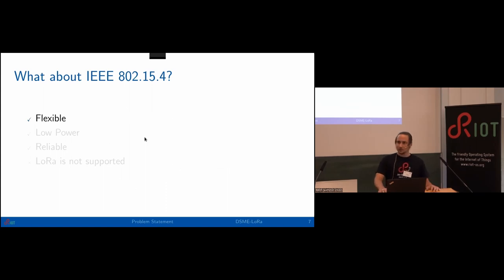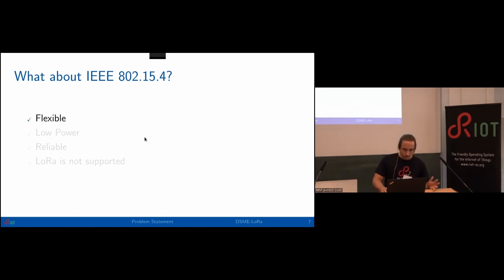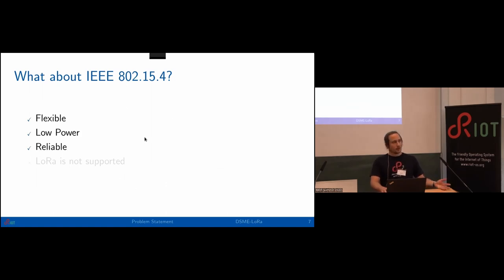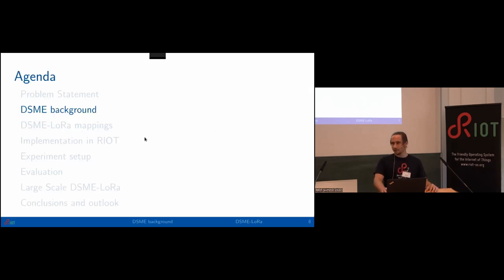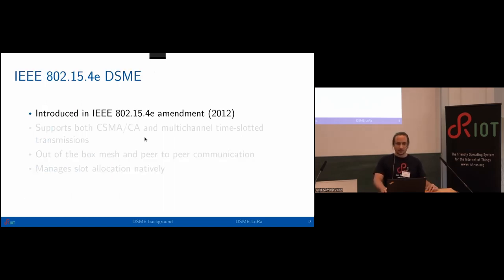What about 15.4? It is well known to be flexible, supports multiple topologies — cluster tree, peer-to-peer — and different transmission patterns. It supports low power devices and reliable communication, but LoRa is not supported. So the question is: if we can somehow run 15.4 over LoRa, can 15.4 overcome these LoRaWAN limitations to enable direct and reliable peer-to-peer communication? That's what we're going to figure out. First, let me talk about DSME, one of the operating modes of 15.4, which was introduced in the 2012 amendment 15.4e, simultaneously with TSCH.